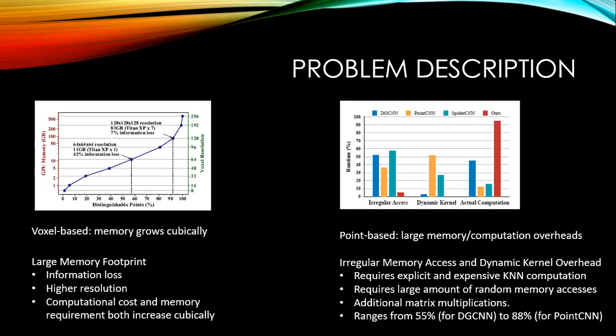From the figure, we can see the number of distinguishable points and memory consumption with different resolution. For example, on a single GPU with 12 GB RAM, the largest resolution is 64, which leads to 42% information loss.